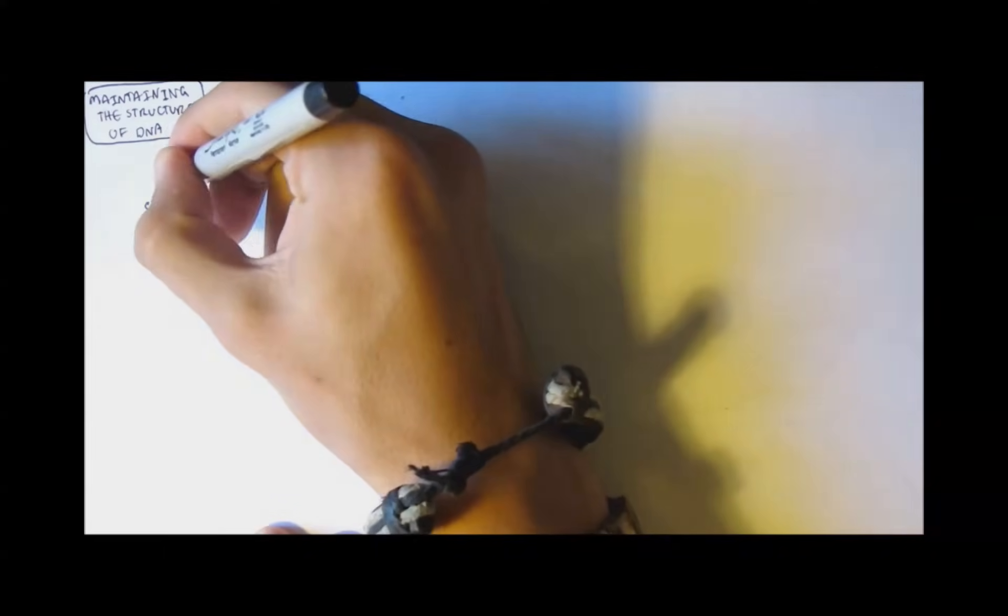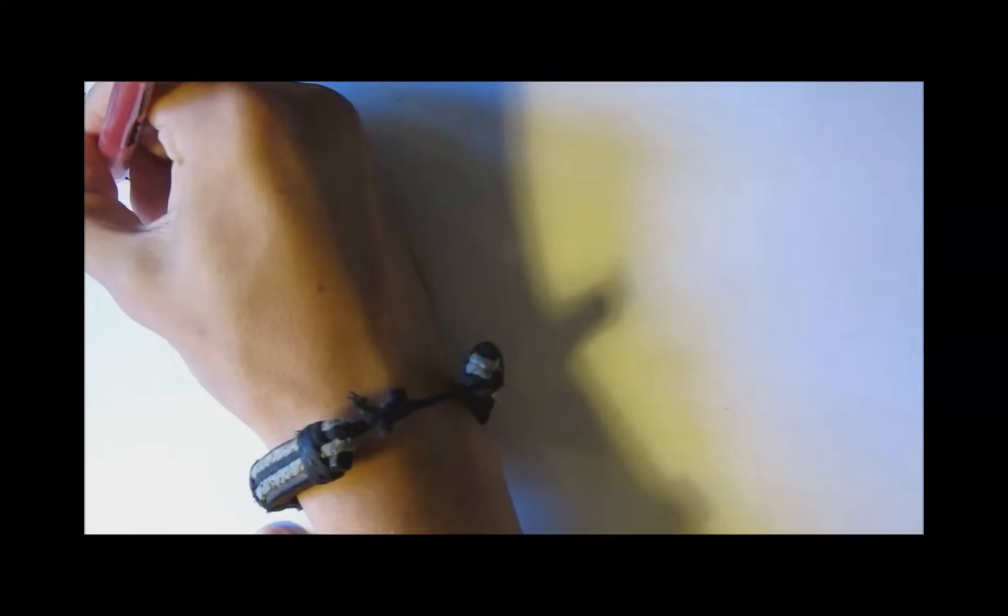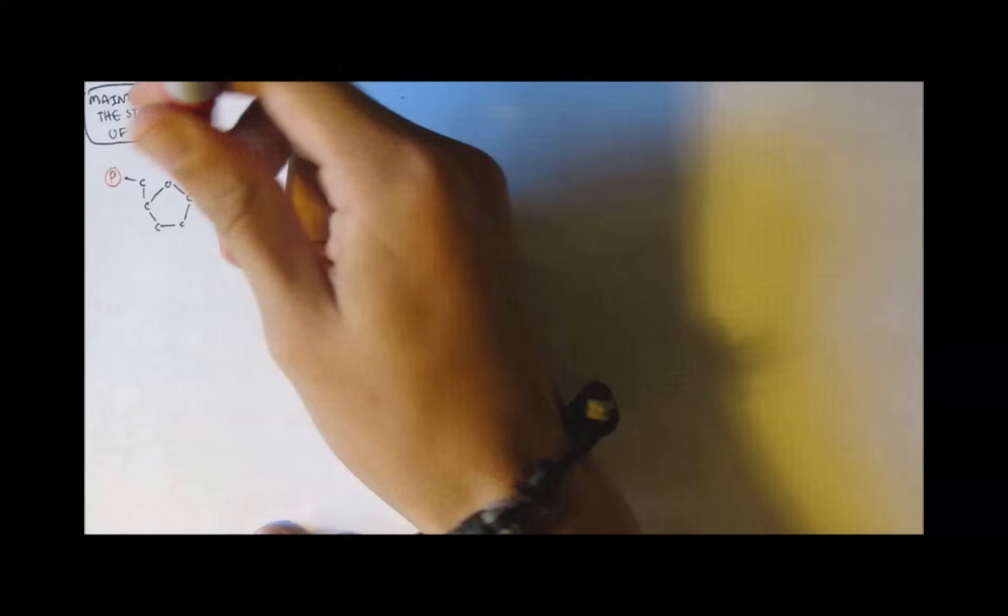Before that, let's recap the basic structure of a nucleotide, which are the building blocks of RNA and DNA. It consists of a 5-carbon ring sugar and a phosphate group. And on the other side is a base.